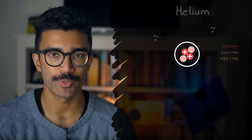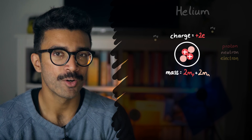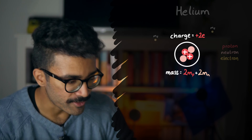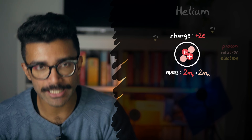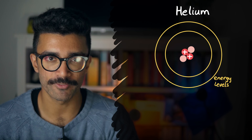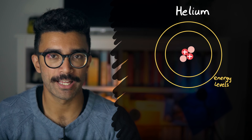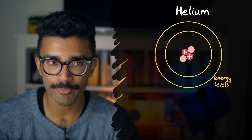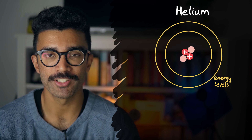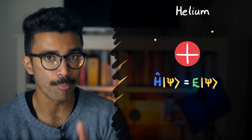Another simplification is treating the nucleus as a single object with a charge of plus two and a mass of two protons and two neutrons. We could treat all the nucleons as separate particles, but that would require accounting for every interaction between them and the electrons, without having a huge impact on the allowed energy levels. The wave function will tell us where the electrons are most likely to be found, which is essentially what the energy levels show us anyway.